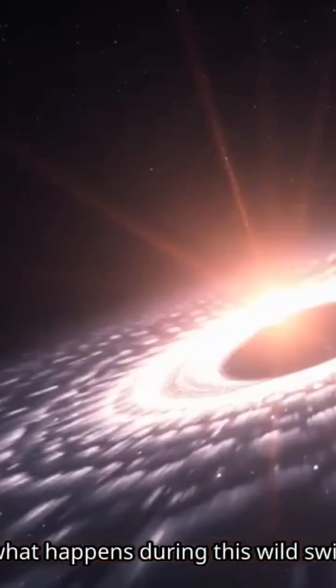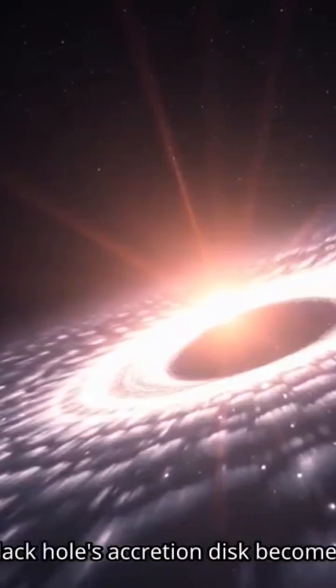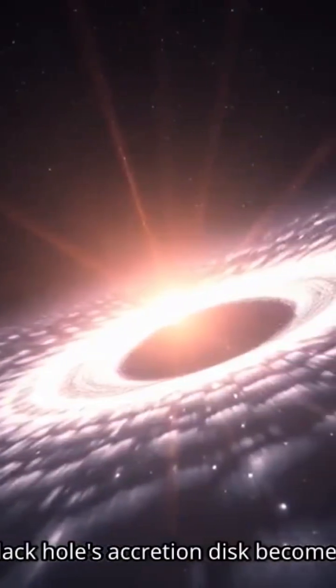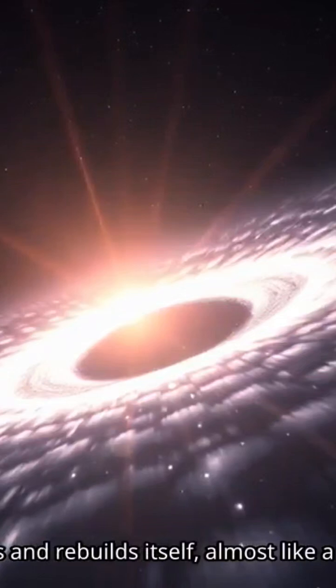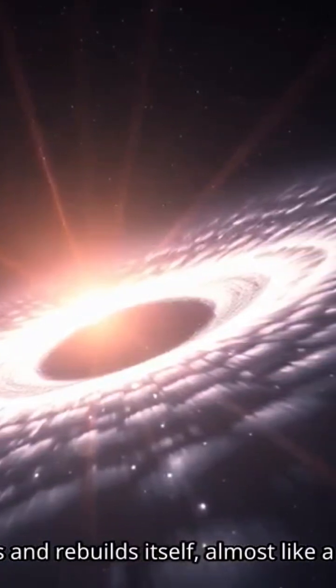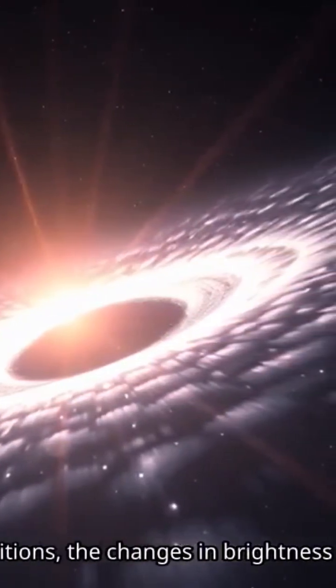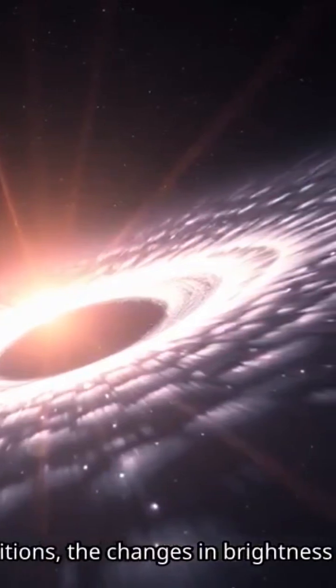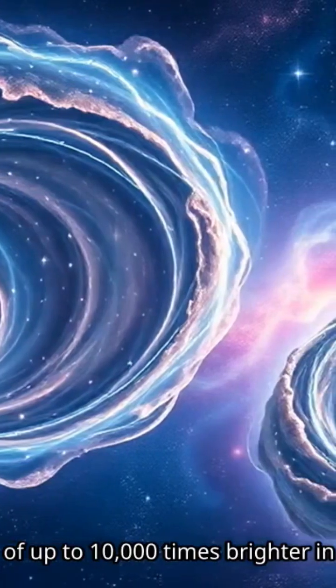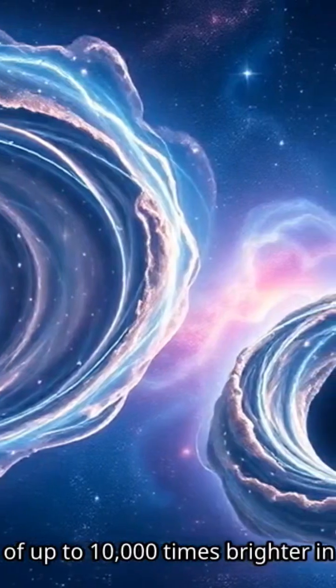So what happens during this wild switch? Well, the black hole's accretion disk becomes unstable. It collapses and rebuilds itself, almost like a heartbeat. During these transitions, the changes in brightness can be staggering, with fluctuations of up to 10,000 times brighter in just a few hours.